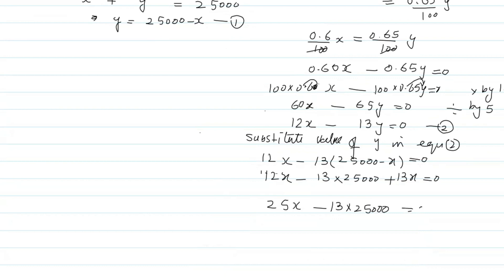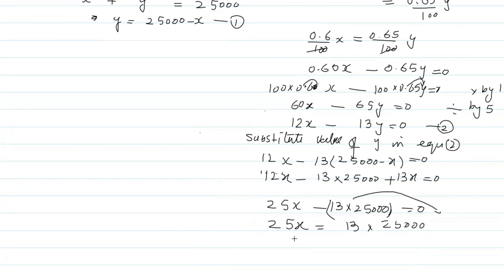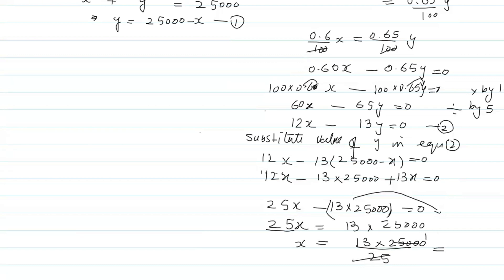Shifting the constant to the right: 25x = 13 × 25,000. Dividing both sides by 25: x = 13 × 25,000 / 25 = 13 × 1,000 = 13,000. So x = $13,000. Substituting x back into equation one: y = 25,000 − 13,000 = $12,000.